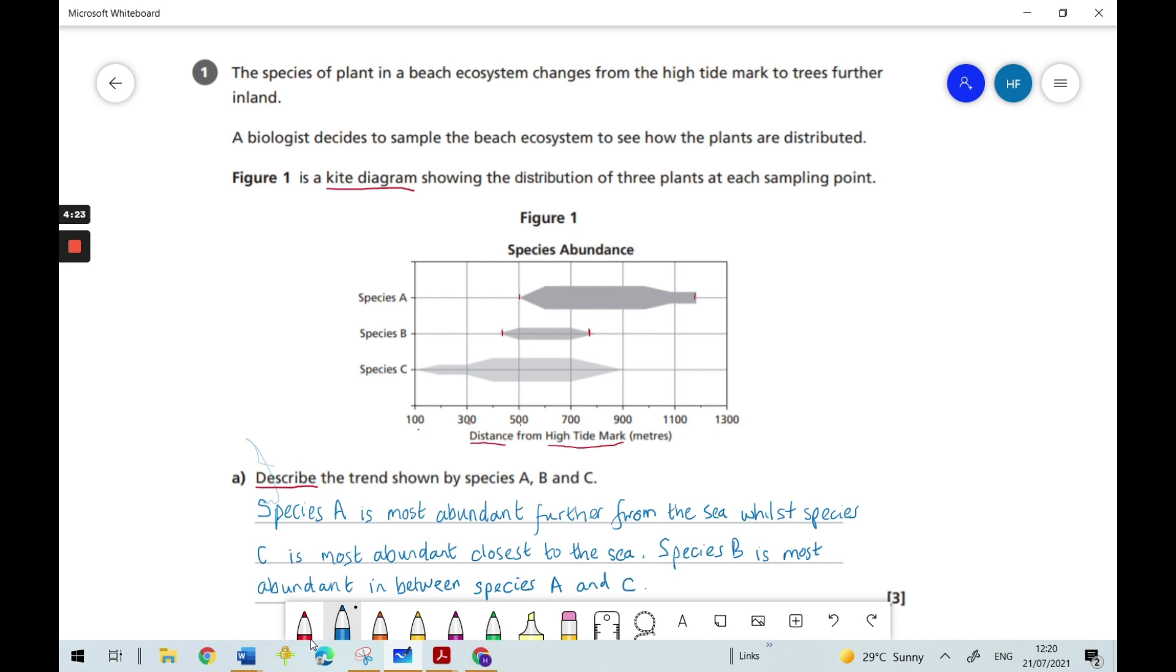And you've got three marks there, so you'd have one mark for talking about the distribution of species A being furthest from the sea, or you could put high tide mark there. One mark for saying species C is most abundant, closest to the sea. Again, or you could use the term high tide mark. And species B is most abundant in between species A and C would be the last mark.